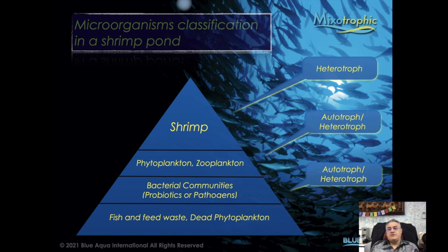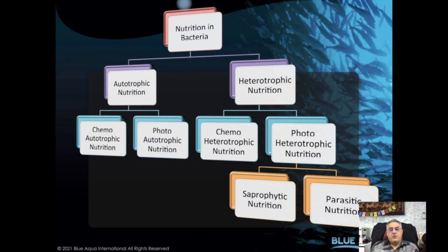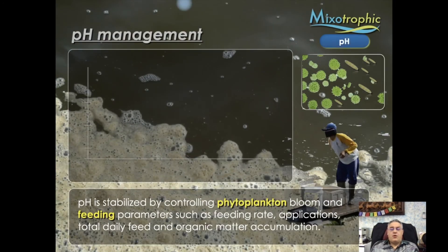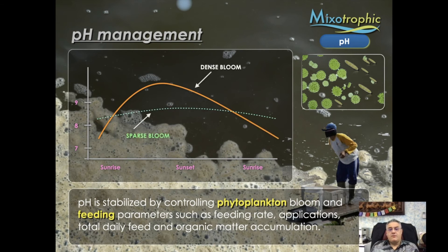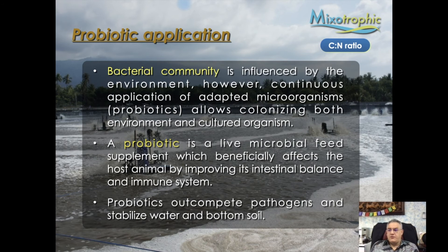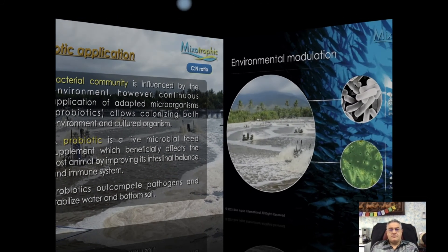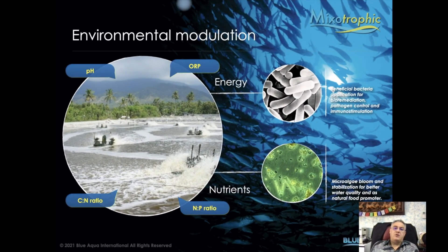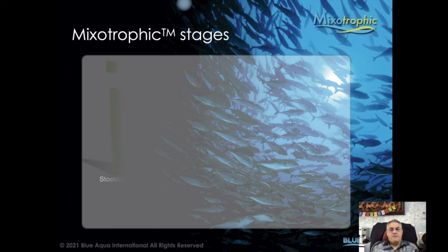When we look at the mixotrophic system and microorganism classification, in layman's terms we have shrimp, phytoplankton, bacteria, fish, and feed waste. All of these together make a very complex environment with different heterotrophic and autotrophic organisms. Phytoplankton management and pH management always come together, with probiotic application as well. In reality, the mixotrophic system is an environmental modulation involving pH, ORP, carbon-to-nitrogen ratio, organic and inorganic carbon, nitrogen, phosphorus, nutrients, energy, probiotics, and phytoplankton.